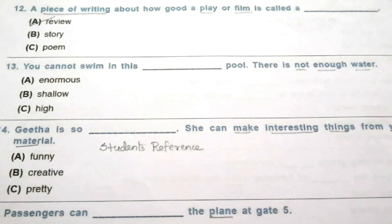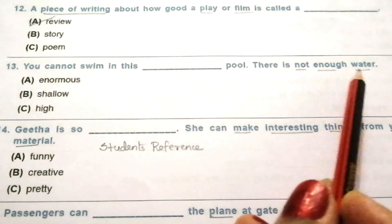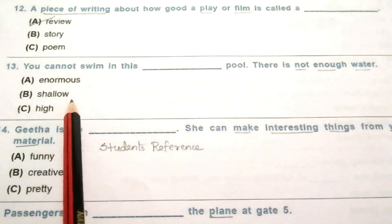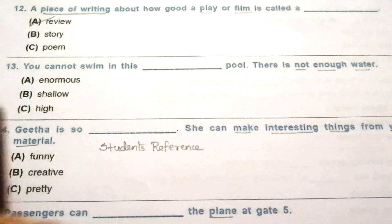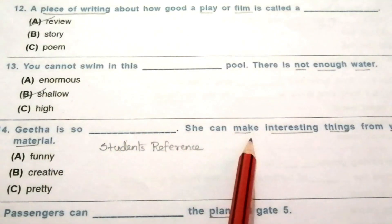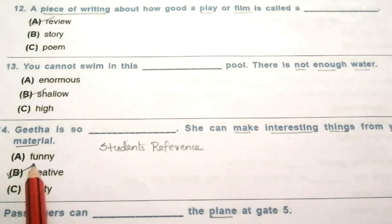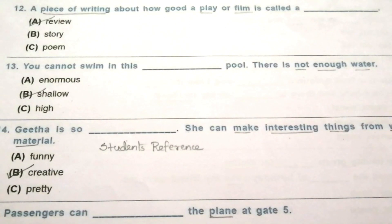A piece of writing about how good a play or film is called a review. Question 13: you cannot swim in this blank pool; there is not enough water — enormous, shallow, high. The answer is B, shallow. You cannot swim in this shallow pool; there is not enough water. Question 14: Geetha is so blank; she can make interesting things from waste material — funny, creative, pretty. The answer is B, creative. Geetha is so creative; she can make interesting things from waste material.